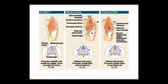When you inhale, the sternocleidomastoid is involved. The accessory muscles — pectoralis minor and serratus anterior — are also engaged. The external intercostal muscles contract. At this point the volume increases, so the pressure inside becomes lower than outside. Internal pressure is lower than atmospheric pressure, so air flows in — we are taking air inside the lungs.